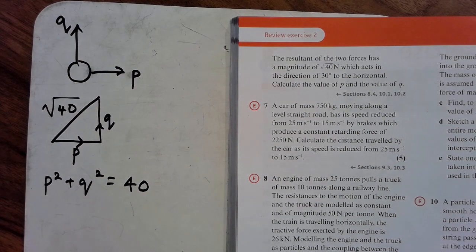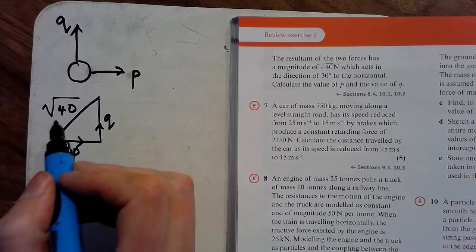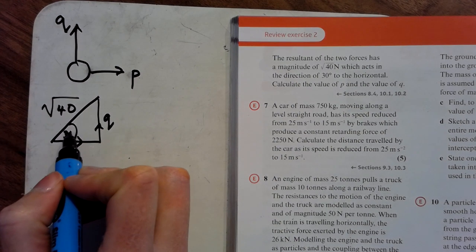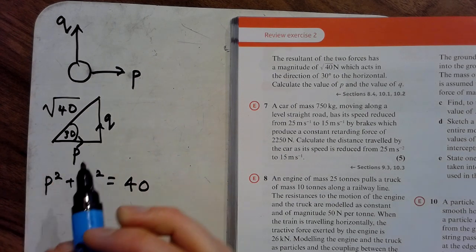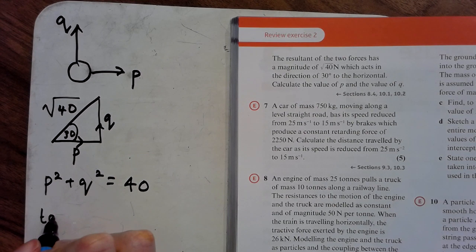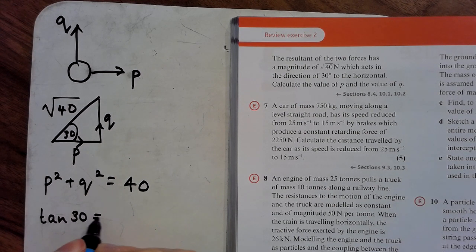The second bit of information is that the angle to the horizontal, so that's that one, is 30 degrees. Now, this is the opposite and this is the adjacent. So tan of 30 is opposite divided by adjacent.